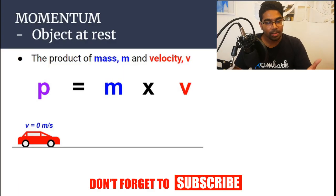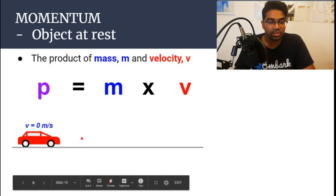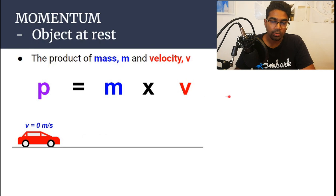Now, since momentum is mass multiplied by velocity, if an object is not moving, it has a velocity of zero. It has no velocity, basically. So when we substitute zero into the equation, then we get mass multiplied by zero.